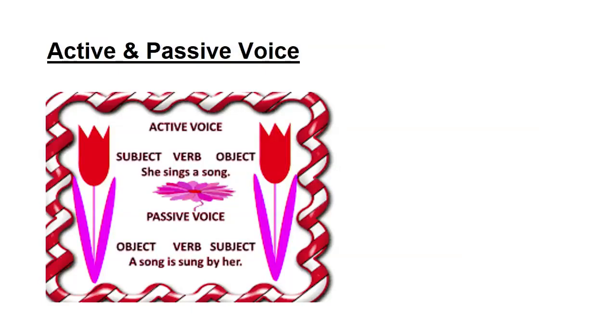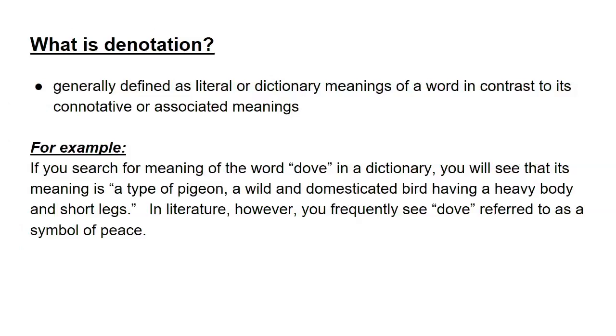Active and passive voice: active voice has subject-verb-object order — 'She sings a song' — she is the subject, sings is the verb, and song is the object. Passive voice reverses to object-verb-subject — 'A song is sung by her.' Active voice describes something happening right now; passive voice tells what happened and how. You need to be able to identify between the two and give examples, or be given sentences and identify whether they are passive or active voice.